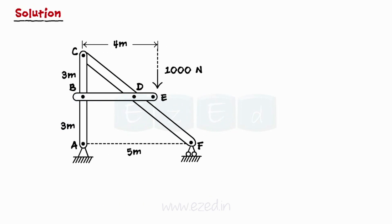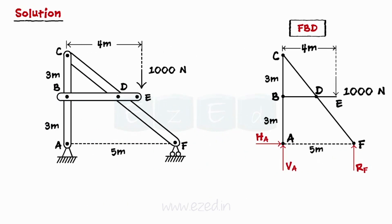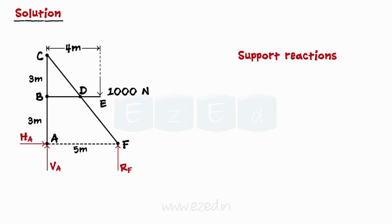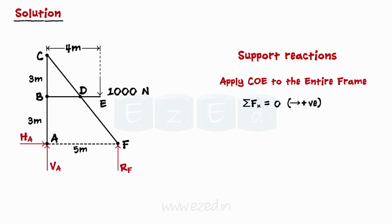We will first draw the free body diagram of the entire frame as shown below, and find the support reactions. We will apply conditions of equilibrium to the entire frame, first equating the summation of all forces in the x direction to zero. Thus, we find the horizontal component of the reaction at support A to be equal to zero.